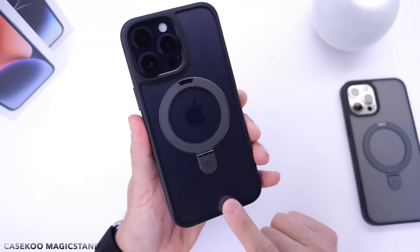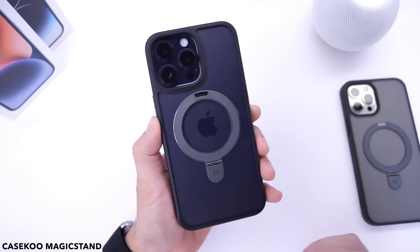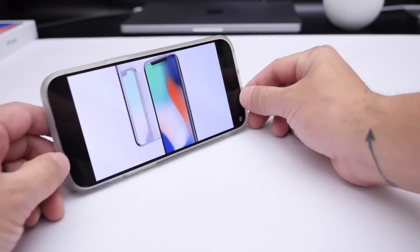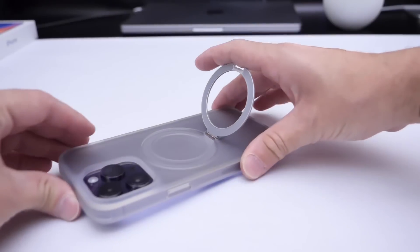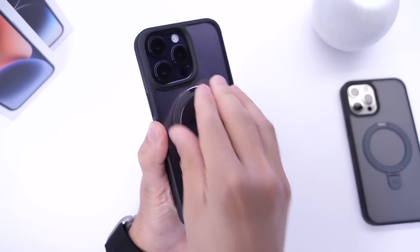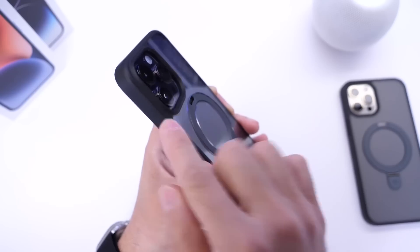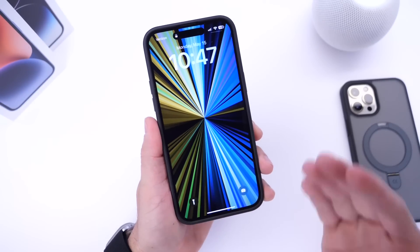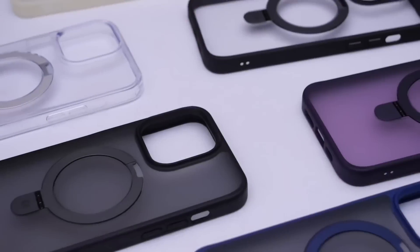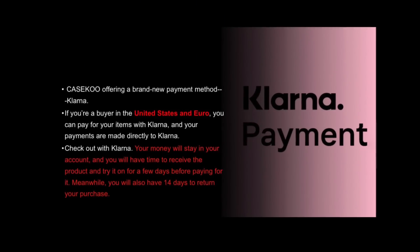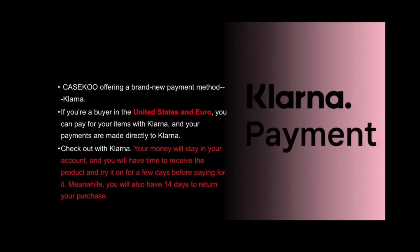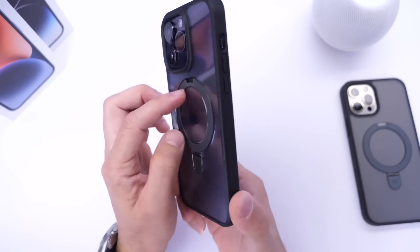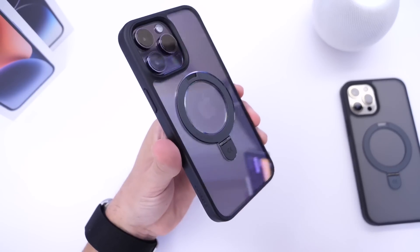But before we do, a quick word from our sponsors, K-School. I've been using K-School cases over the last several months. This is the Magic Stand case — a magnetic stand that lets you watch movies, prop it up for FaceTime calls, and it doesn't interrupt your MagSafe experience. It protects your camera and screen, the build quality is amazing, and it's available in multiple colors including gold, purple, clear, and black. K-School has now introduced Klarna, so US and European buyers can try the product for a few days before paying, and you still get a 14-day return policy. Highly recommended if you're looking for a practical case.